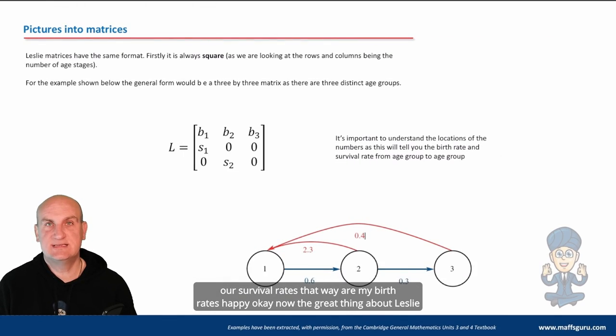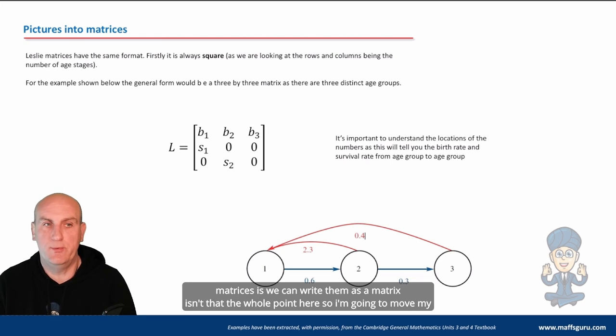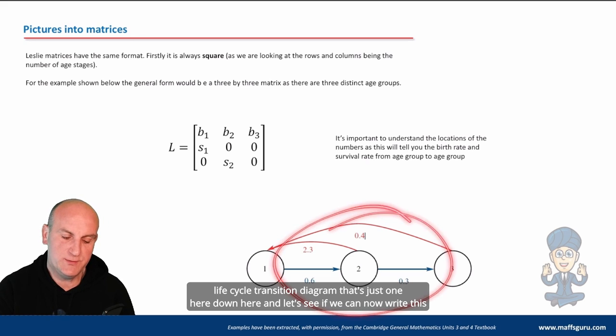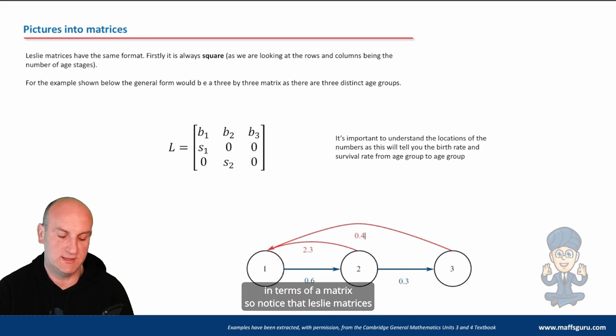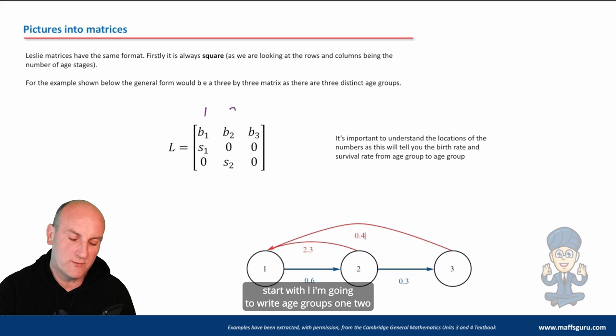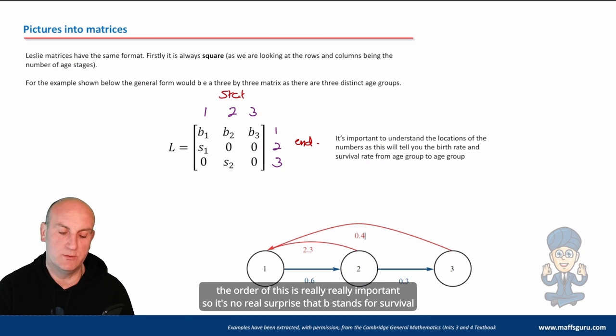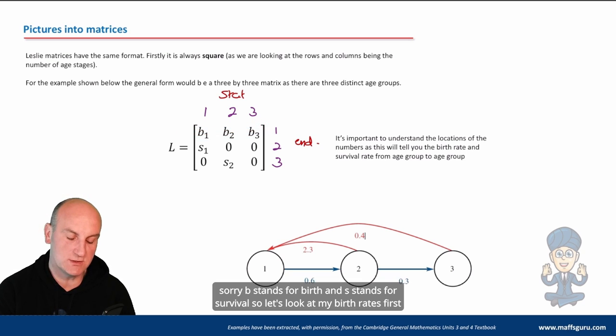Now, the great thing about Leslie matrices is we can write them as a matrix. Isn't that the whole point here? So I'm going to move my life cycle transition diagram, that's this one here down here, and let's see if we can now write this in terms of a matrix. So notice that Leslie matrices start with L. I'm going to write age groups one, two, and three. One, two, and three. And what I'm going to write up here is start and end, because the order of this is really important. So B stands for birth and S stands for survival. So let's look at my birth rates first.